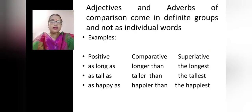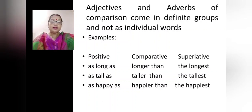Adjectives and adverbs of comparison come in definite groups and not as individual words. For example: positive — as long as; comparative — longer than; superlative — the longest. Now, you will find that long has only one syllable — one sound: long. So it takes -er to make the comparative and -est for the superlative degree.